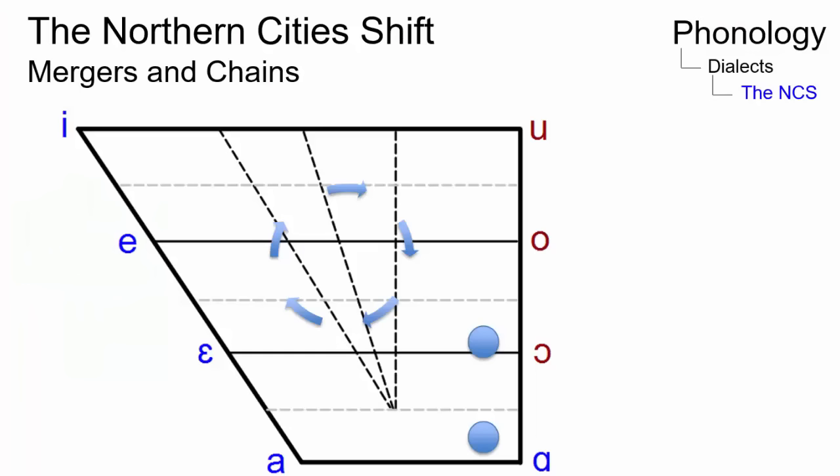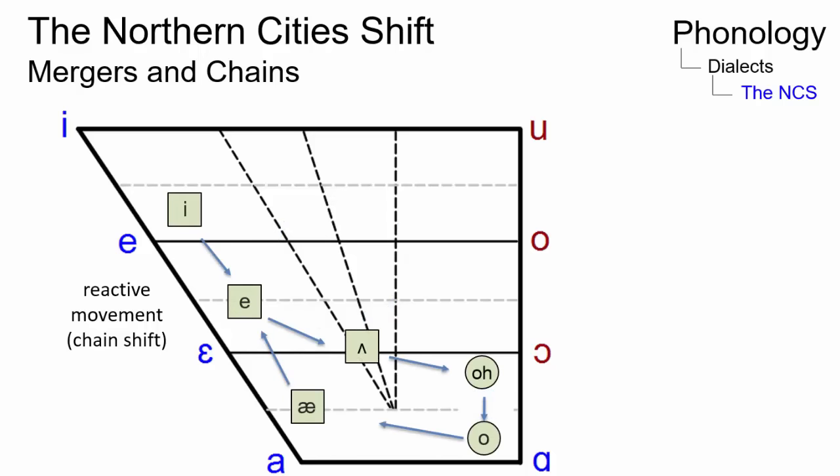When one vowel sound moves into another vowel's associated state, the result may be a merger of the two vowels or a reactive movement in a neighboring vowel. Such a change can spark a series of vowel movements that may result in multiple vowels receiving new places of articulation and tongue height.